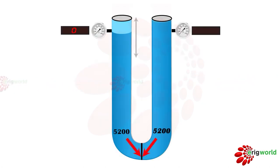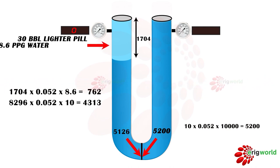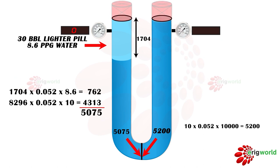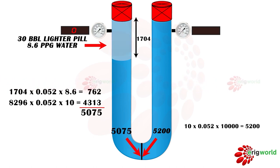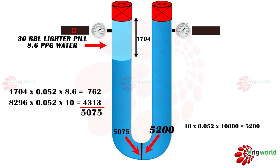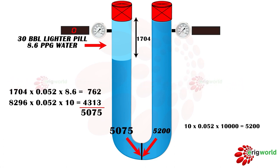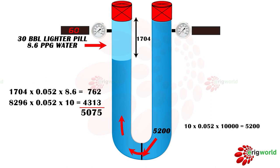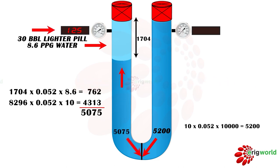If a lighter fluid is pumped into the drill pipe instead of a heavy slug — for example, 30 barrels of 8.6 ppg water pumped into the drill string — and the well is shut by closing BOP and FOSV, then the hydrostatic pressure in the drill string decreases to 5075 psi because of the lighter water pill, while the annulus hydrostatic pressure remains unchanged at 5200 psi. Because the well is closed from both sides, the drill pipe pressure gauge will show a differential pressure of 125 psi.